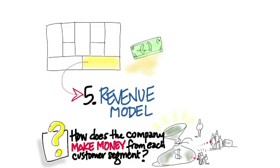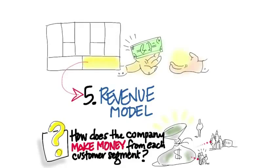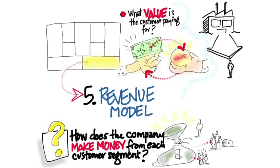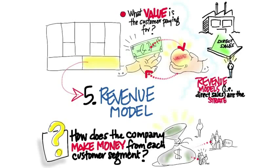One of the things we always tend to confuse is the difference between a revenue model and pricing — that is, the amount of dollars we might actually charge for the product. This is a common mistake. What we're really trying to understand first is what value is the customer paying for, and what is our revenue model — our revenue stream. That's our strategy.